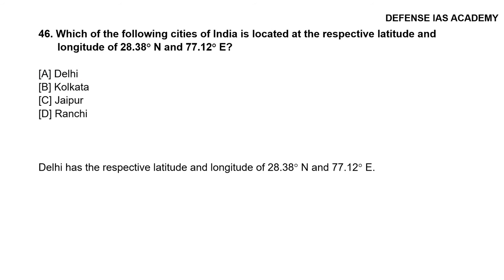Question 46: Which of the following cities of India is located at the latitude and longitude of 28.38 degrees north and 77.12 degrees east? The correct answer is option A, Delhi. Delhi has the respective latitude and longitude of 28.38 degrees north and 77.12 degrees east.